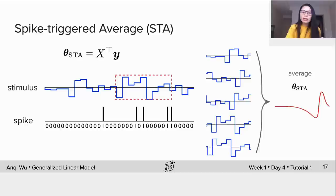In general, θ_MLE is a better estimator than θ_STA, but the spike-triggered average estimator doesn't involve the matrix inversion.